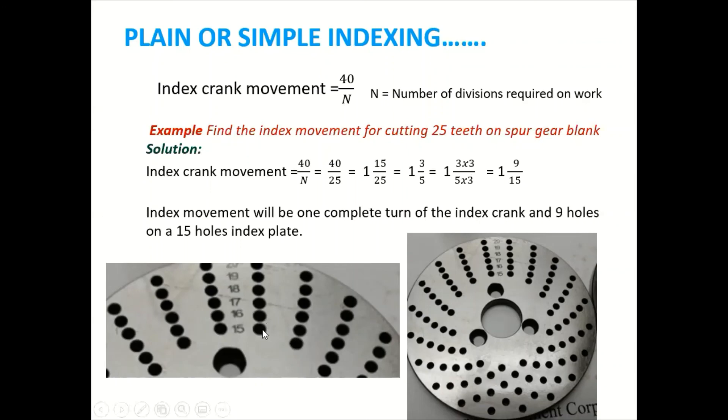So how we can do, what it means that the index movement will be one complete turn of the index crank and 9 holes on a 15 hole index. So I will tell you what is the meaning of that. So first of all, I have to select the hole circle of the 15. You can see in this diagram here also, or here means 15 hole circle you have to select.